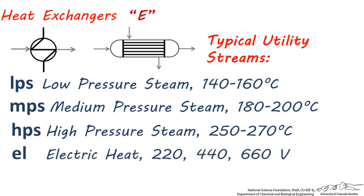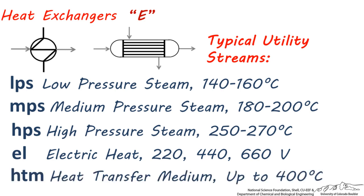Electric heat, abbreviated EL, which uses either 220, 440, or 660 volt electricity to resistively heat a stream. And lastly, heat transfer medium, abbreviated HTM, which usually involves using a high boiling point hydrocarbon to heat up a stream up to around 400 degrees centigrade.